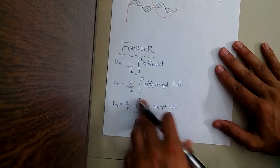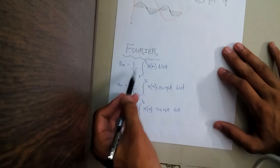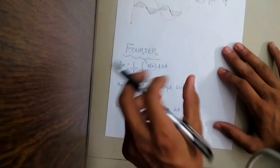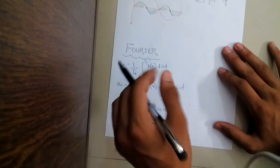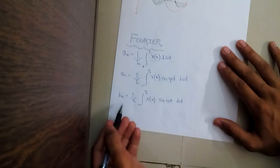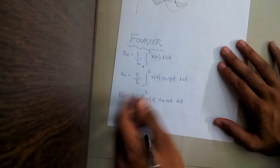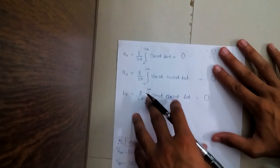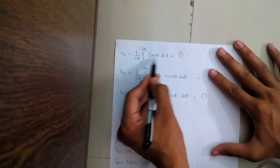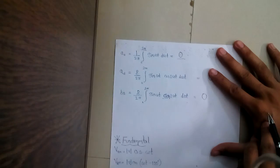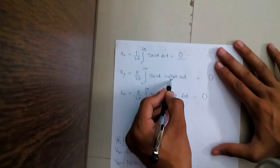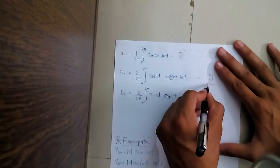In Fourier series, you must know these formulas. For the DC part: A naught = (1/T₀) ∫₀^T₀ x(t) d(ωt). For Aₙ: (2/T₀) ∫₀^T₀ x(t) cos(nωt) d(ωt). For Bₙ: (2/T₀) ∫₀^T₀ x(t) sin(nωt) d(ωt). So for a sine wave, if I find A naught = (1/2π) ∫₀^2π sin(ωt) d(ωt), it comes out to be 0. If I find the second harmonic A2 = (2/2π) ∫₀^2π sin(ωt) cos(2ωt) d(ωt), it also comes out to 0.